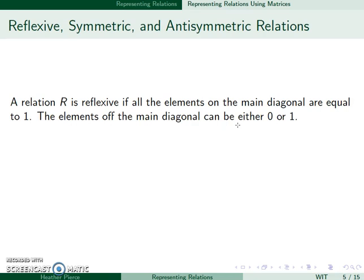It's easy to see reflexive, symmetric, and antisymmetric when dealing with these matrices. A relation is reflexive if all the elements on the main diagonal are equal to 1. The elements off the main diagonal can be whatever they want as long as the diagonal is 1.